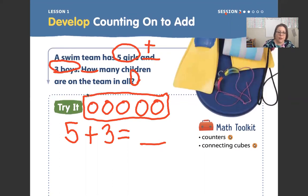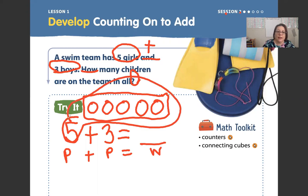Okay, we know that a part... oops, I need to grab my round tool again. We know that a part plus a part equals the whole, right? Five is our part and three is our other part. One, two, three.